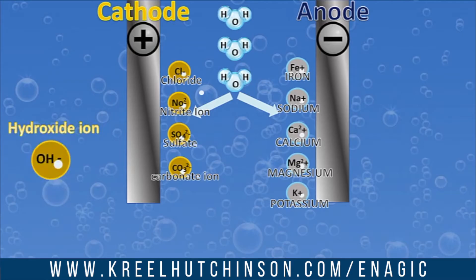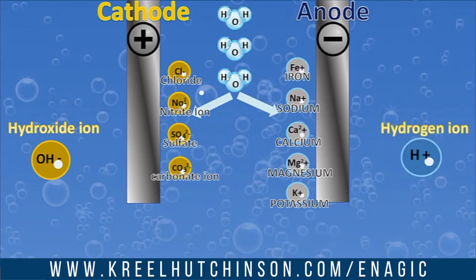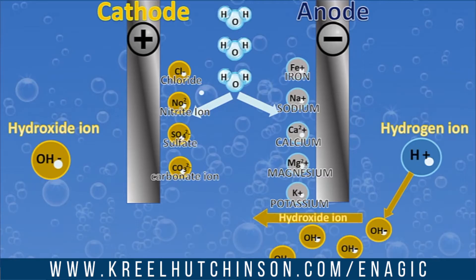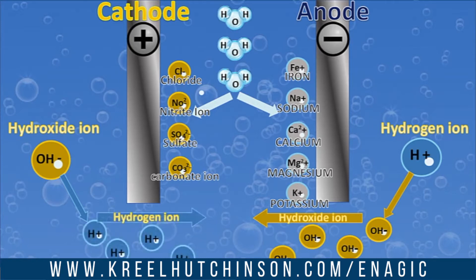As the water gets charged, we're creating a hydroxide ion, and on the other side we're creating a hydrogen ion. This happens as the hydroxide ion gets released with the charge — we're splitting the H2O on this side. And on the other side, to create this hydroxide ion, we're releasing the hydrogen ion.